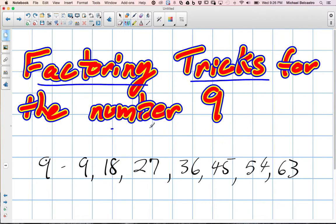We're going to look at a factoring trick for the number 9, or a divisibility rule. So you can see I have a whole bunch of multiples of 9 here.